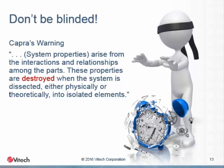Here we again point back to Capra's warning that the system properties are destroyed when the system is dissected, either physically or theoretically, into isolated elements. A model of one class of system elements, or of a single component or subsystem, may be useful for testing component performance, for example, but it is not the system model contemplated for model-based systems engineering.